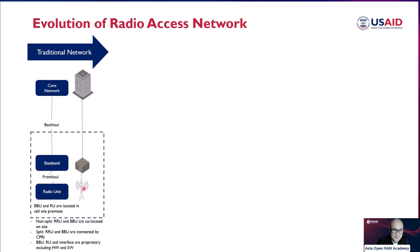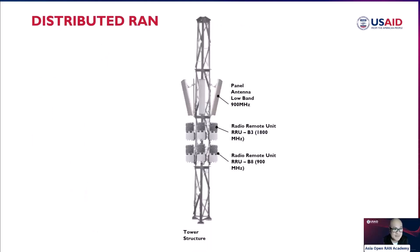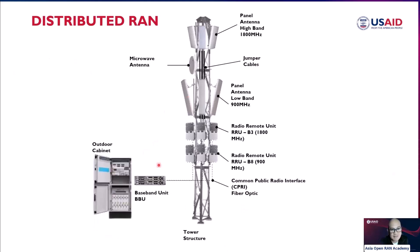D-RAN consists of separate baseband units and radio units which are connected via dedicated fiber or copper cables. The baseband unit and the remote radio unit are located in the cell site premises. We call it the distributed RAN because we are distributing the RAN equipment across different locations — the baseband units and radio units are located inside the premises of each cell site.